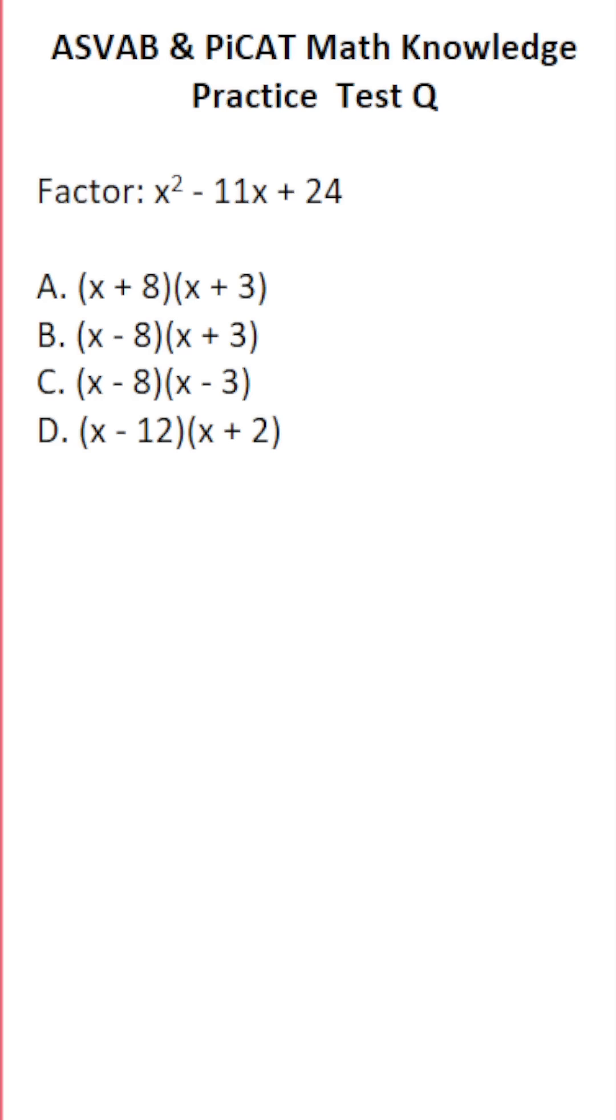This math knowledge practice test question for the ASVAB and PiCAT says factor x squared minus 11x plus 24. Since this has a leading coefficient of 1, if we can factor it, it's going to look like this: x times x in parentheses.